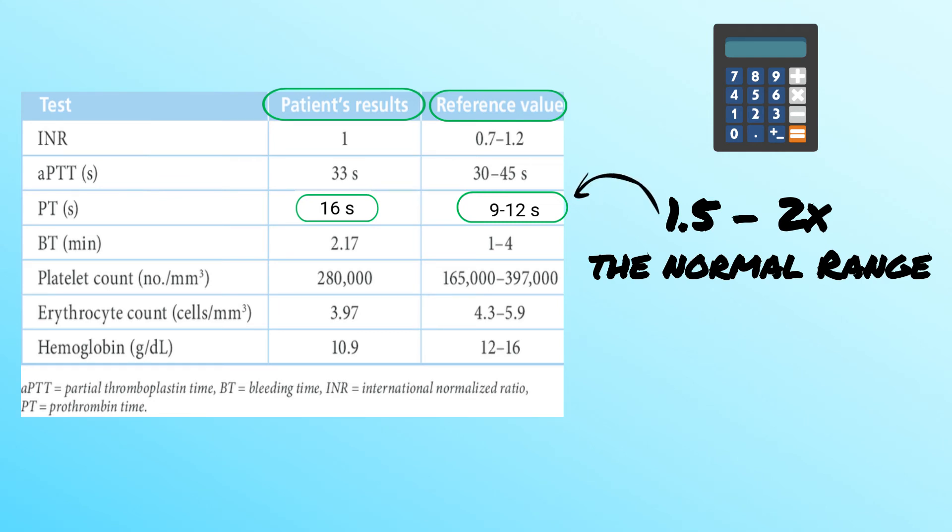So, simply multiply the therapeutic range on the lab report by 1.5 to 2. This comes out to 13.5 to 24.